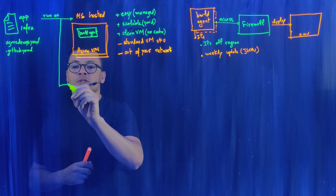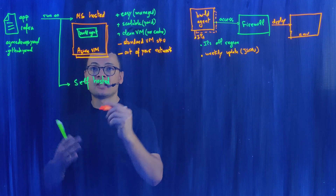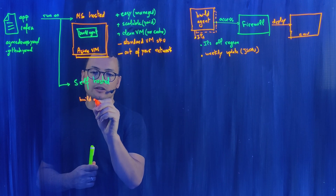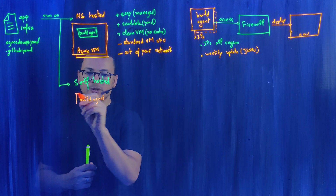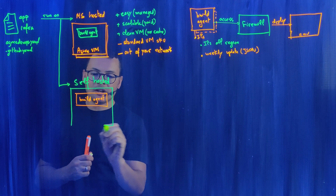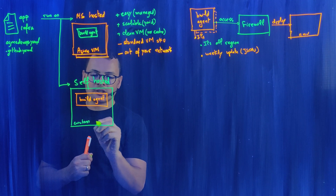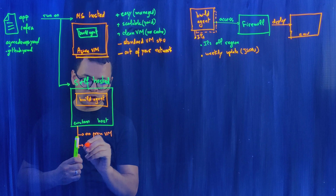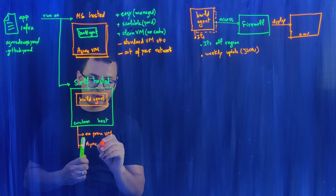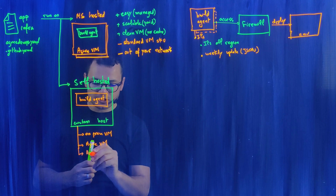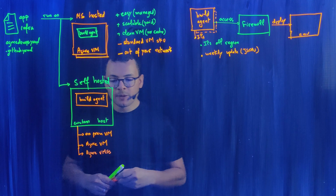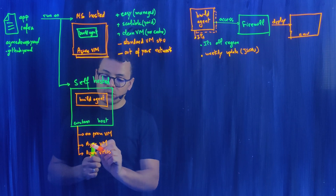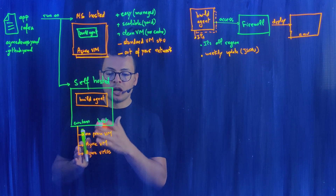The self-hosted agent means Microsoft gives you the build agent executable file and you run it within your own infrastructure. You can download it from GitHub or Azure DevOps, then run it where you want. Hosting options include an on-premise virtual machine, an Azure virtual machine within your own virtual network, or an Azure virtual machine scale set — a group of VMs that scale together — which allows your pipelines to scale horizontally when running multiple parallel jobs.